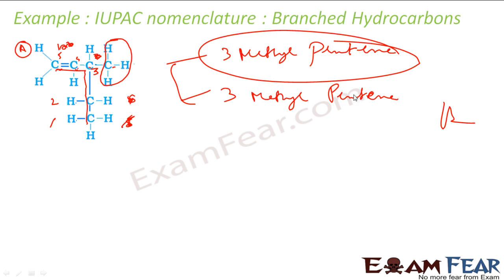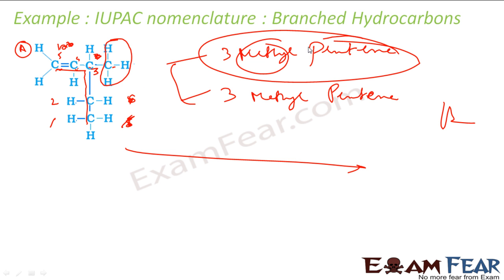So, to summarize: first find the parent chain that contains all multiple bonds and is the longest one — that solves 50% of the problem. Then find the extra methyl or alkyl groups attached. Write the name in the format: position and name of alkyl group in ascending order, then the parent hydrocarbon. Number the chain from both ends and choose the numbering that gives the alkyl group the lower number.